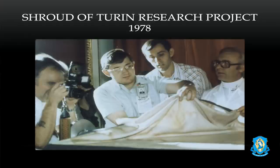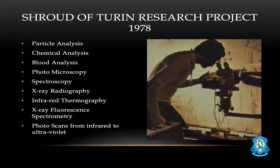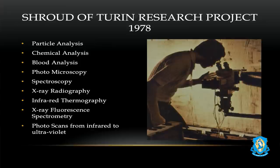Three years later in 1978, testing was done on the shroud and they found many interesting facts. The analysis included particle analysis, chemical analysis, blood analysis, photomicroscopy, spectroscopy, X-ray radiography, infrared thermography, X-ray fluorescence spectrometry, and photo scans from infrared to ultraviolet — they did all of these to the image on the shroud. There were no inorganic pigments — no substances manually applied to the cloth, no artistic substances, no collagen binder.